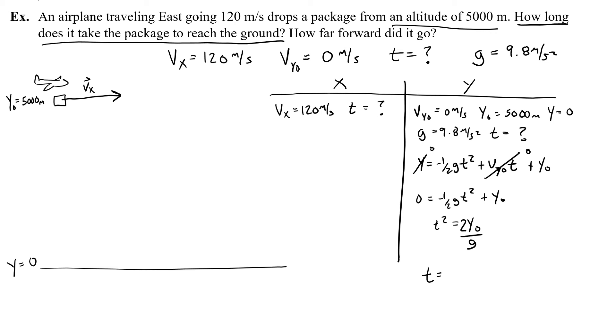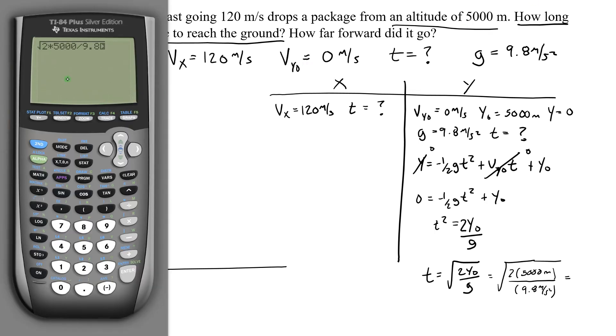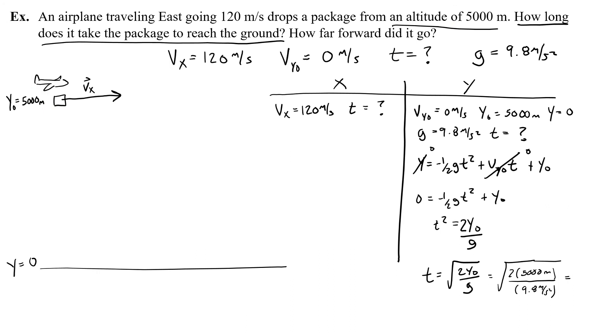Okay, so now I have t squared equals 2y0 divided by g, so t is the square root of 2y0 over g. Okay, so I'll plug in those numbers, the square root of 2 times 5,000 meters divided by 9.8 meters per second squared, and I'm going to get 31.94, so let's call that 32.0 seconds. 32 seconds.